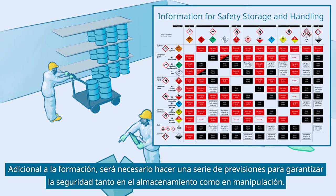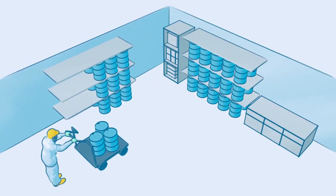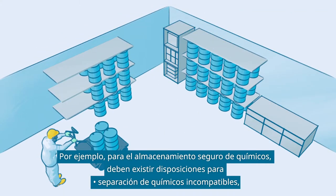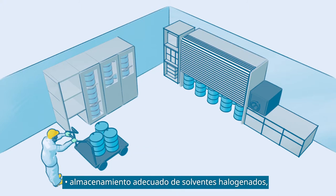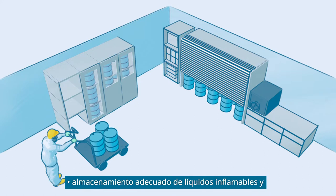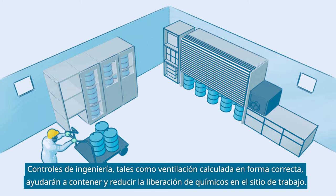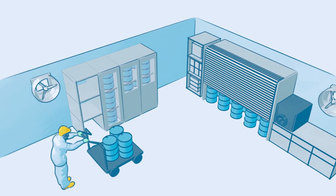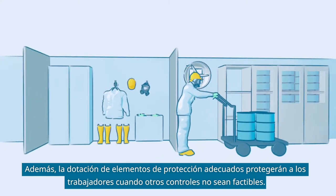In addition to training, a number of provisions may be necessary to guarantee safe storage and handling. For example, for safe storage of chemicals, there should be provisions for separation of incompatible chemicals, adequate storage of halogenated solvents, adequate storage of flammable liquids, and secondary containments. Engineering controls such as ventilation will help to contain and reduce the release of chemicals into the workplace. In addition, the provision of adequate personal protective equipment will safeguard workers when other controls are not feasible.